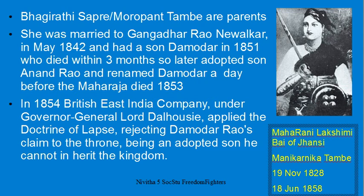She was married and had a son, but the child was lost when it was three months old. They then adopted a son called Anandrao, renamed him Damodhara, and brought him up. Under the Doctrine of Lapse, if a king had no biological son, the kingdom could not pass to an adopted son, and upon his death the kingdom would be taken away by the British. This is what happened to the Kingdom of Jhansi.